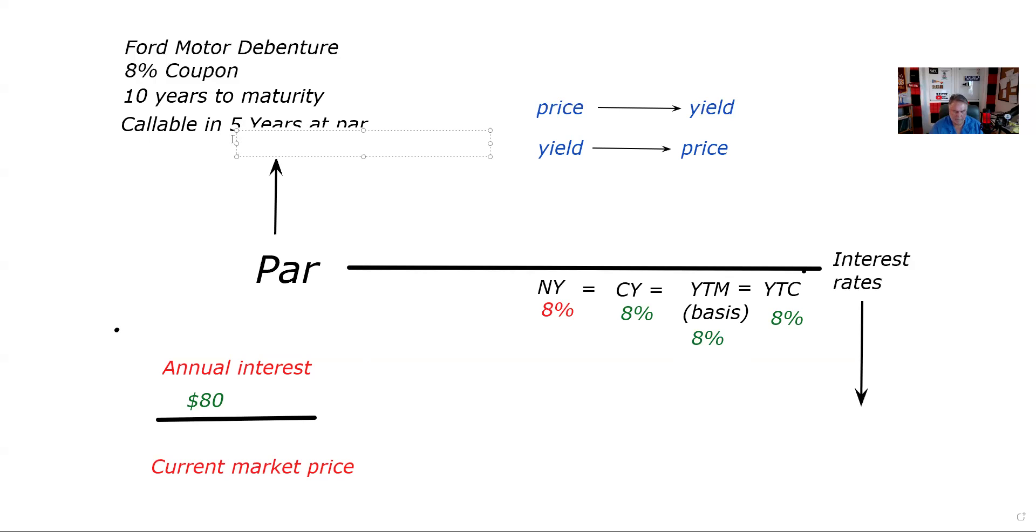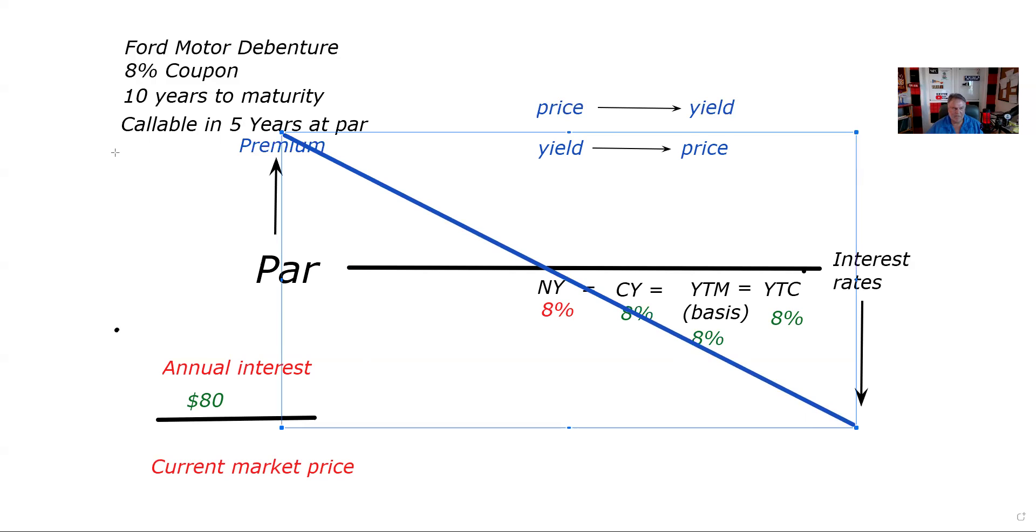And again, what we love about the teeter-totter is the teeter-totter turns judgment questions into aim and shoot point and click questions. And so now we're going to look at what effect that would have. Now, you may still want to buy this bond, but to buy this bond, you'd want to know what is the yield to call. If you find that yield to call to be attractive, maybe you still want to buy the bond. You need to know the yield to call to decide whether or not you want to buy the bond.